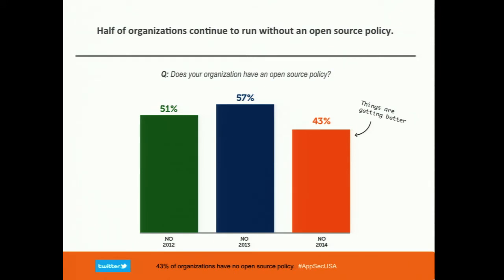What guidance would you give someone who doesn't have an open source policy? Having a policy like OWASP A9 — that you shouldn't use components with known vulnerabilities — is the lowest bar you could put in place, and any company not doing that is being pretty irresponsible. That said, vulnerabilities in components are one part of the application security picture, and you need to get a handle on them as well as all the other OWASP top 10 items. It's one part of a well-balanced breakfast.